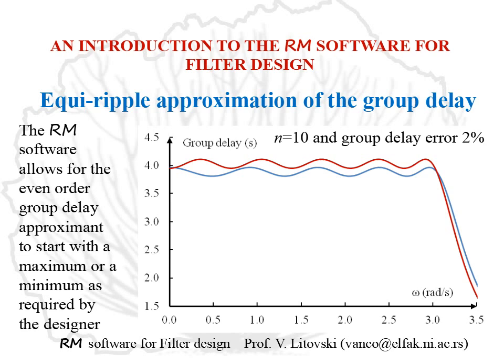The RM software allows even-order group delay approximations to start with a maximum or a minimum as required by the designer. This is a unique property of the RM software. Here we have a tenth-order filter with a group delay error of 2%. By imposing the group delay to start with a minimum — shown as the red line — we slightly reduce the approximation interval, which remains three times broader than the passband of the filter. So that reduction is insignificant.